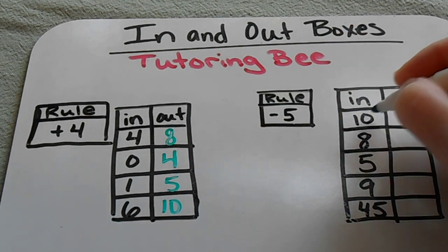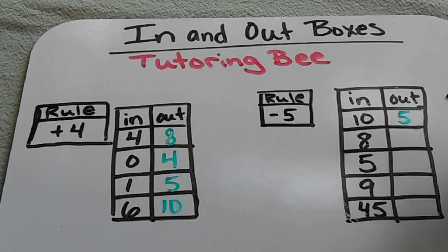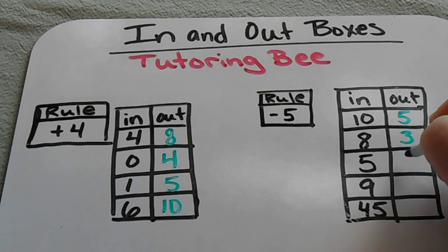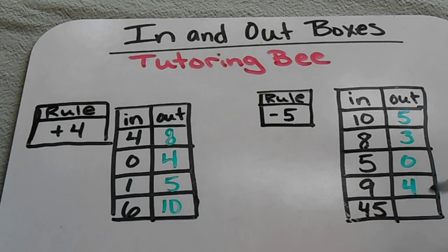The rule might be subtraction. So a 10 would become a 5. An 8 would become a 3. 5 would become 0. 9 would become a 4. And 45 would become 40.